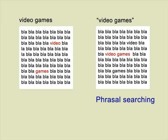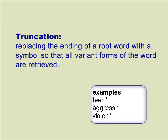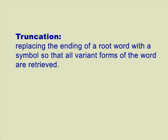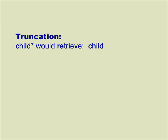Another useful technique is called truncation. Truncation is when you replace the ending of a root word with a symbol. This tells the search engine to retrieve documents containing all variant forms of that root word. Most often, the symbol for truncation is an asterisk, but you can always check a database's help files under truncation to make sure you're using the correct symbol. Here's an example: if we enter 'child' with an asterisk, the database would retrieve documents containing 'child', 'child's', 'children', and 'childhood'.